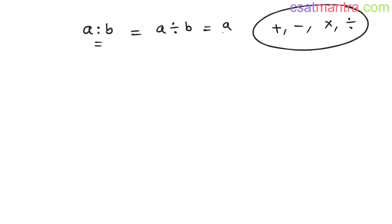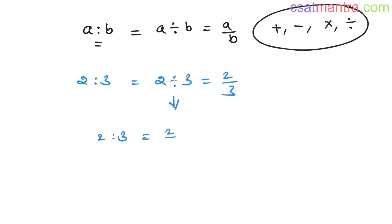A ratio B means A divided by B, written as A by B. For example, two ratio three means two by three. Four ratio five means four by five. To write it as a ratio you need two is to three; to write it as a fraction you need two by three — vice versa.